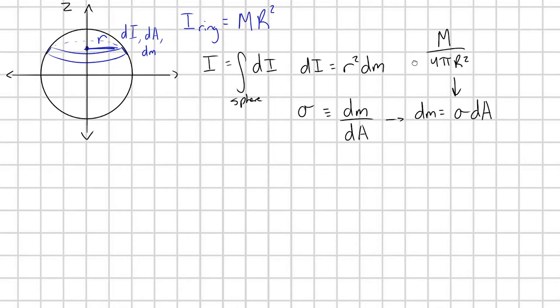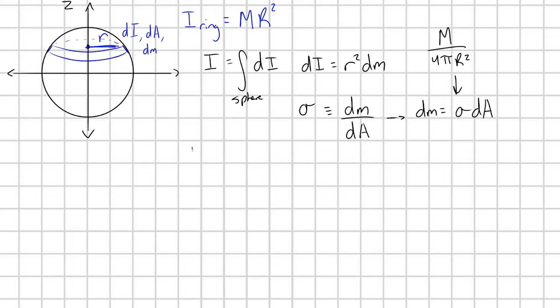Awesome. So let's plug in what we have so far. We have I is equal to the integral over our sphere of m over 4 pi r squared times r squared times dA. That's where we're at right now.